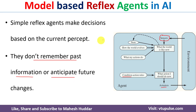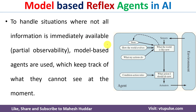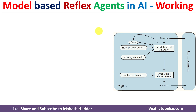This is the limitation of simple reflex agent. In the model-based reflex agent, we can handle all the limitations of simple reflex agent by maintaining the internal state of the model. There are mainly five steps in model-based reflex agent.